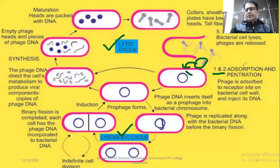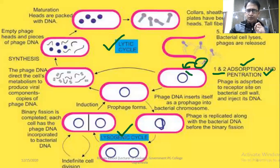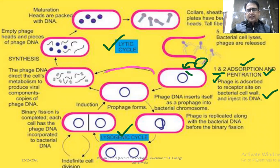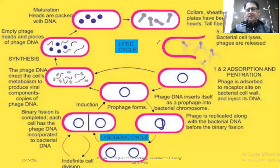Steps one and two are adsorption and penetration. The phage is adsorbed to the receptor site in the bacterial cell wall and injects its DNA. This is the first step. After that, there are two pathways for bacterial cell lysis. The first pathway is named the lytic cycle.